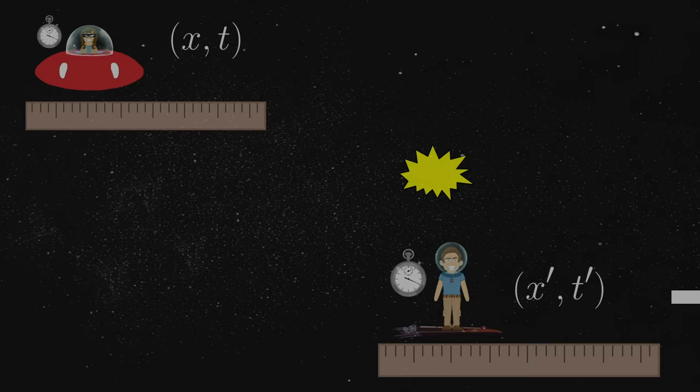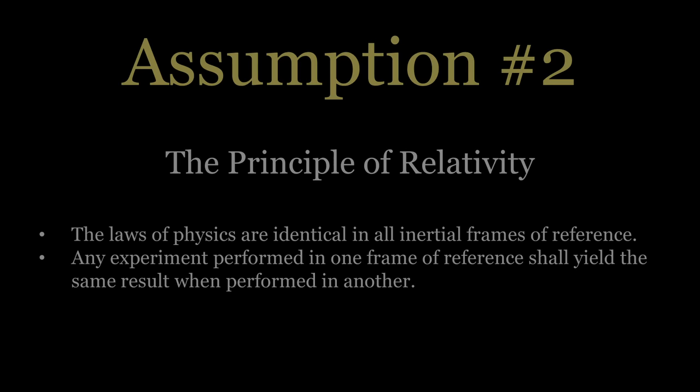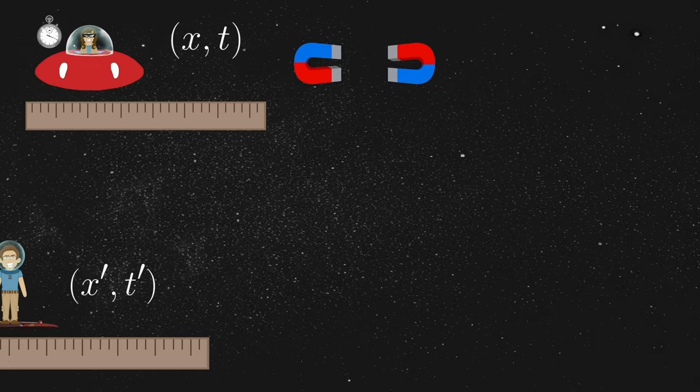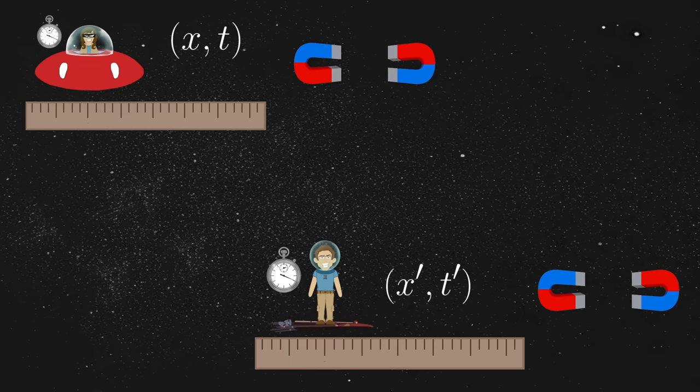One important consequence of this assumption is that any experiment performed in one frame of reference must yield the same result when performed in the other. For example, suppose Annie holds up two magnets and measures the force between them. Then, for whatever reason, Jim happens to replicate that exact same experiment in his own cockpit an hour later. All other things being equal, it seems natural to expect that Jim's result should perfectly replicate Annie's.